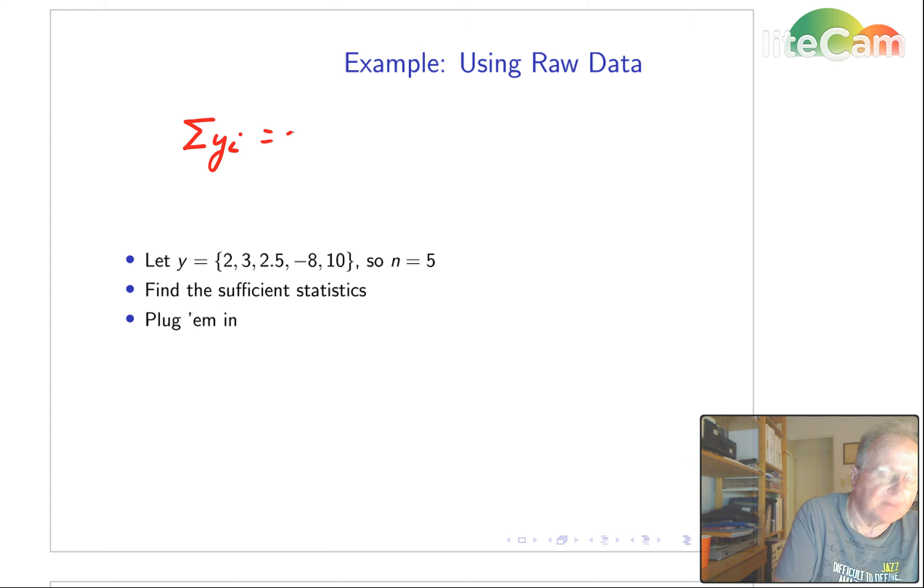y sub i, 2 plus 3 plus 2.5 minus 8 plus 10, and that gives us 9.5.